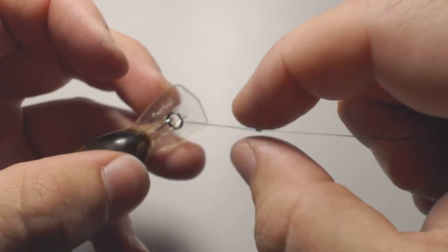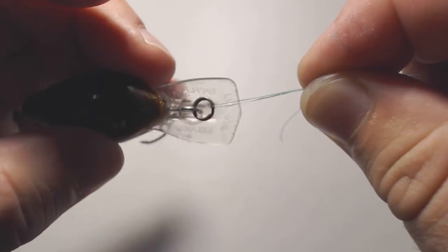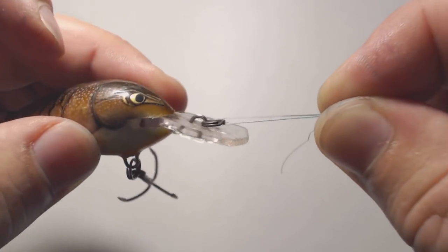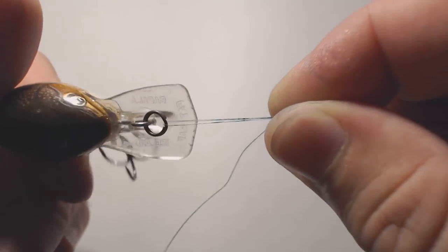So now you have that loop there and that will provide as much wobble as anyone would want. That's called the Rapala knot.